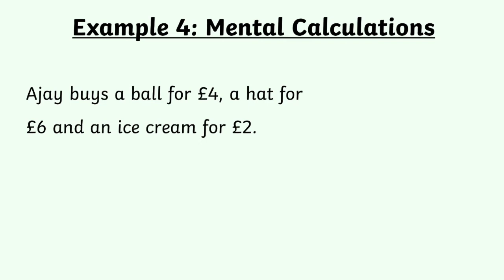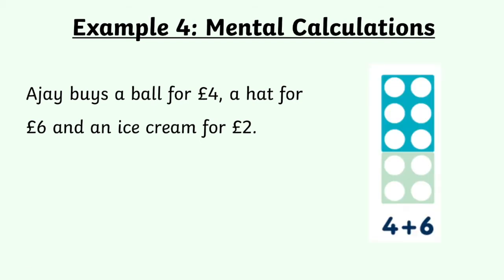Let's have a look at a word problem. AJ buys a ball for £4, a hat for £6, and an ice cream for £2. What is the total amount AJ spent? We've got three numbers: 6 add 4 add 2. We could count on our fingers or draw things out, but there's a really simple way using the 4 add 6 number bond. Two of those numbers add together to make 10 — £6 and £4. So straight away we know we're on £10, and then we just need to add 2 more, which gets us to £12.